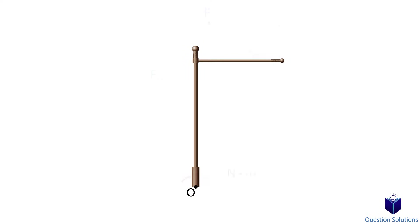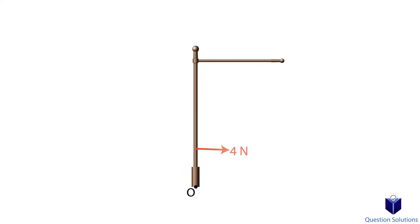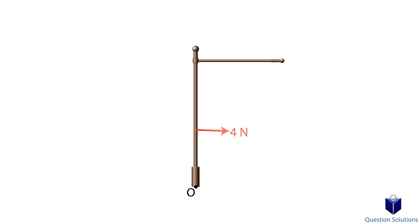Now let's go back to our metal post. We can actually go one step further than showing a resultant and a couple moment — we don't even have to show a moment. Instead of showing the couple moment, we can place our resultant force anywhere on the vertical post to account for the moment as well, because remember, it's force times perpendicular distance.